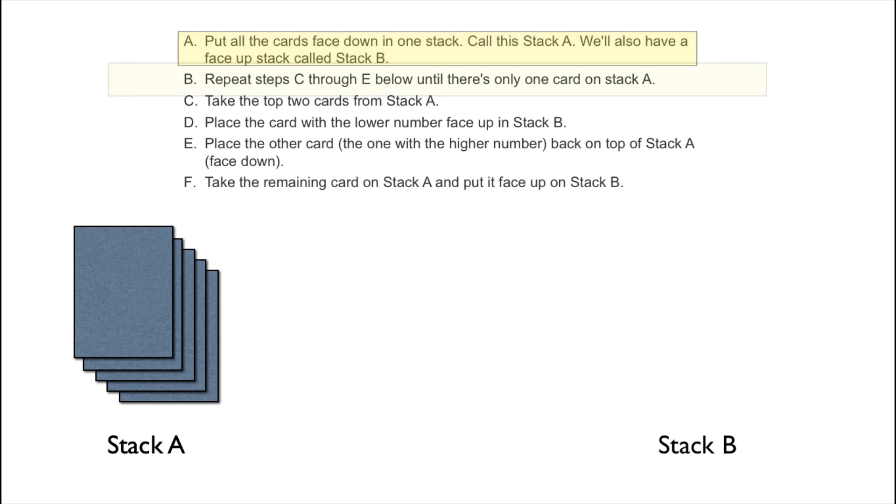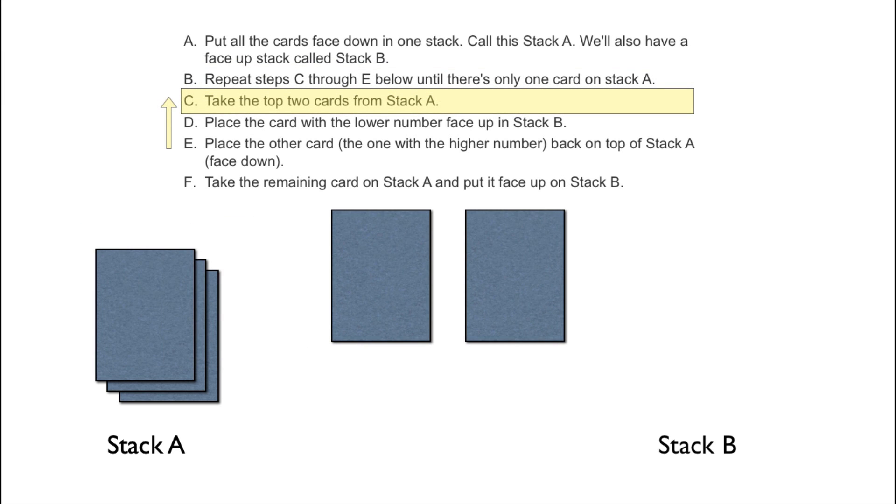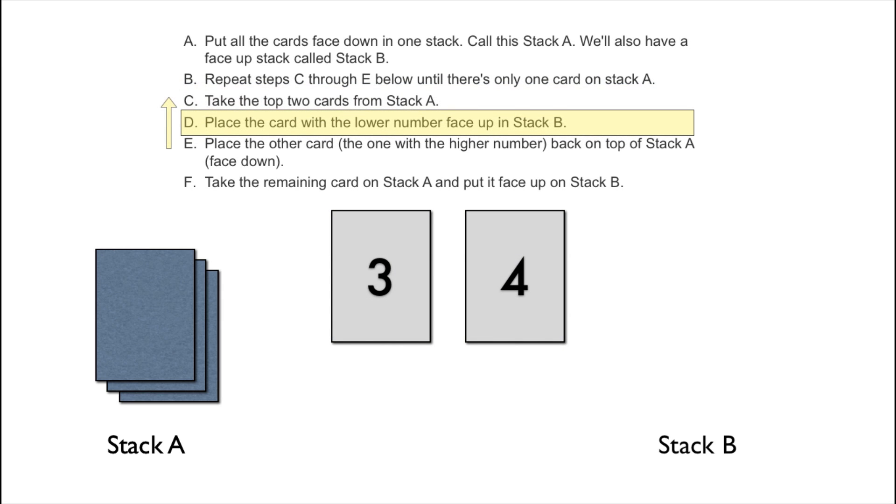The next step is to repeat step C through E below until there's only one card on Stack A. To represent repeating C, D, and E, I'll go ahead and place an arrow there. Then we'll take the top two cards from Stack A and flip them over so we can compare them. Place the card with the lower number face up in Stack B. We've gone ahead and done that.